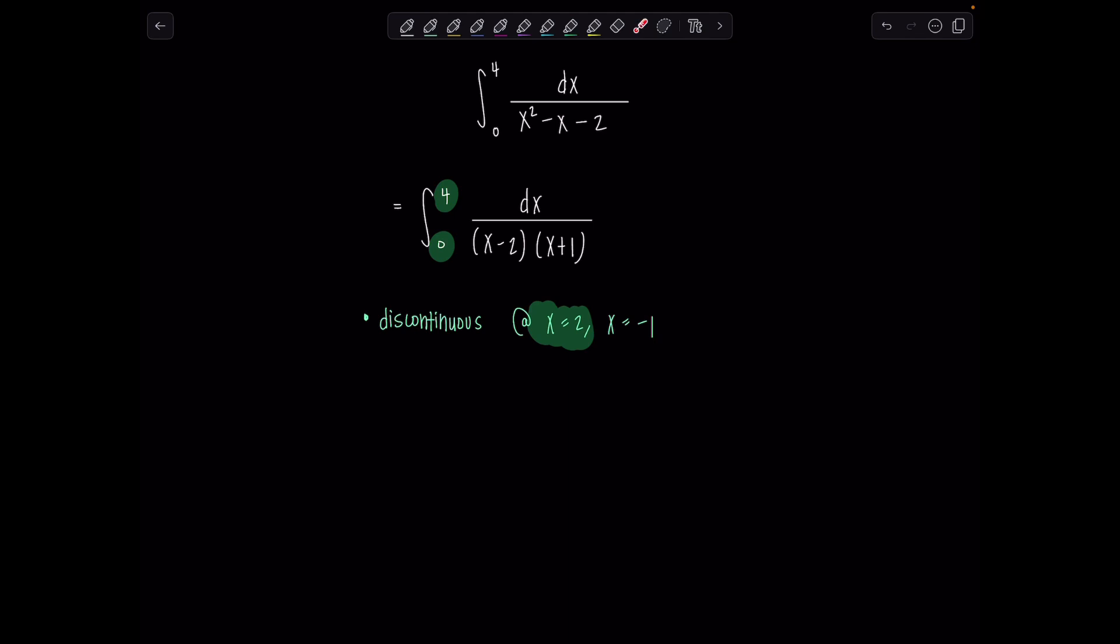So how do we proceed? 2 is in the middle. It doesn't have to be smack dab in the middle like it is, but it's not one of the endpoints. It's not the lower limit or the upper limit. So I have to split this into two integrals now. So we're going to go 0 to 2 dx over x minus 2 times x plus 1 plus, and then pick up where you left off, 2 to 4, same thing.